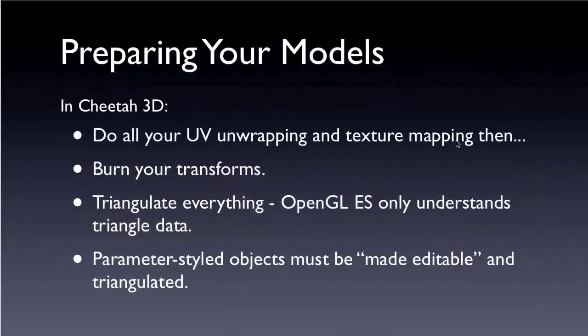Skipping over the subject of UV unwrapping and texture mapping, which you can figure out or find another tutorial for, you'll notice I triangulated everything and triangulated parameter-styled objects. But what about this burn transforms requirement?